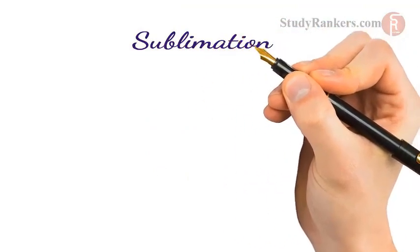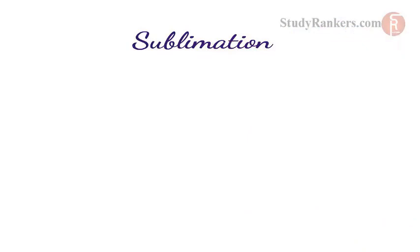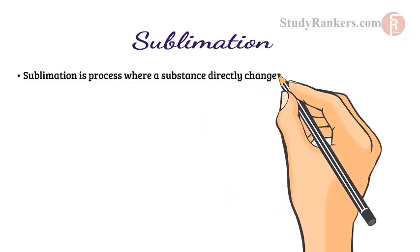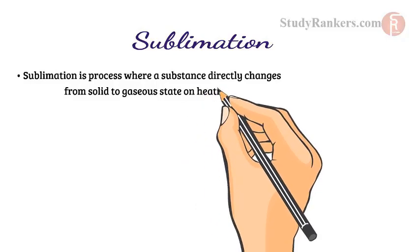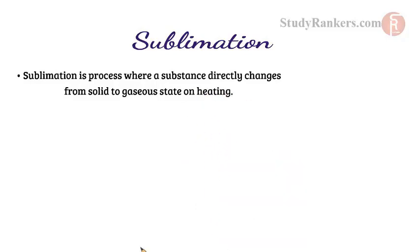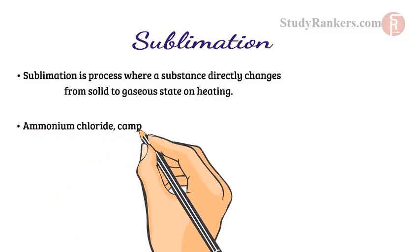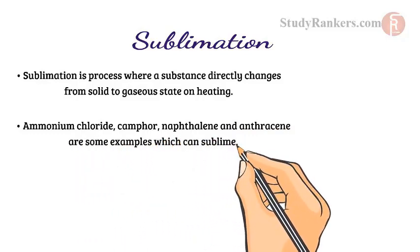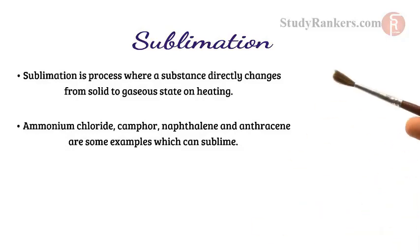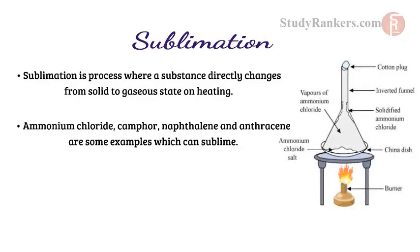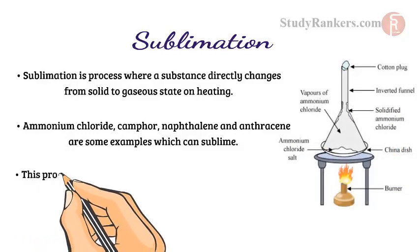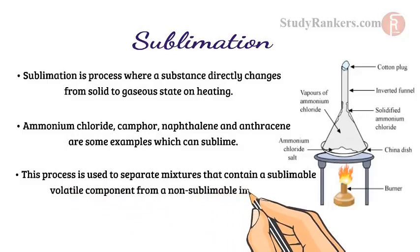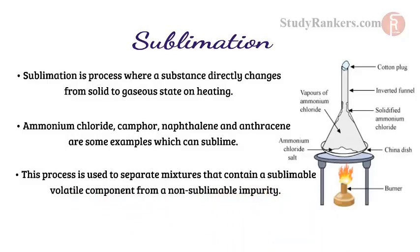Now we will discuss sublimation. Sublimation is the process where a substance directly changes from solid to gaseous state on heating. Some examples of compounds which show the property of sublimation are ammonium chloride, camphor, naphthalene, and anthracene. This process is used to separate mixtures that contain a sublimable volatile component from a non-sublimable impurity.